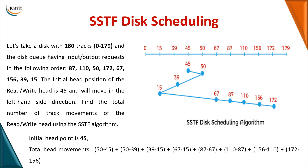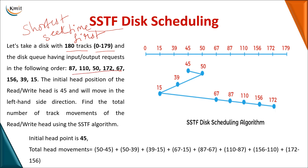The next disk scheduling algorithm is Shortest Seek Time First (SSTF). In SSTF, we calculate based on seek time — the algorithm selects the request with the shortest seek time first. In an exam question, you'll be given 180 tracks numbered 0 to 179, an order of requests, and an initial head position. If no initial head position is specified, you randomly choose one and start tracing the algorithm.